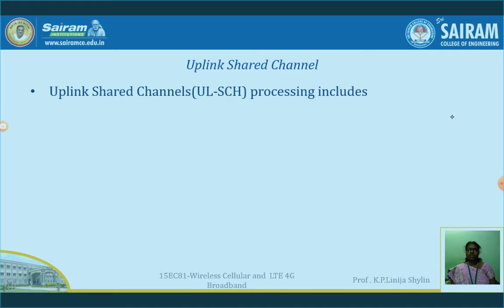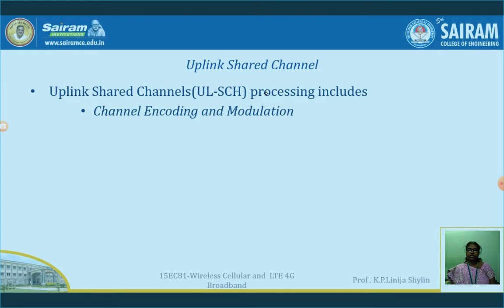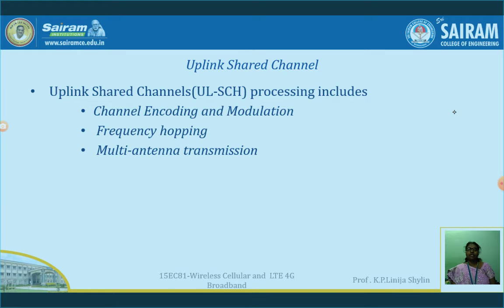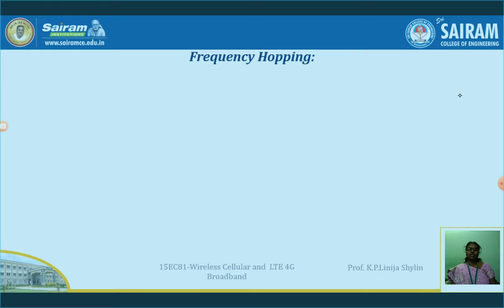In continuation of this, we will see the processing. There are 3 types of processing in the uplink shared channel. The first one is channel encoding and modulation — the modulation part we have discussed in the previous session. The next is frequency hopping, and the third is multi-antenna transmission. Here we are going to discuss frequency hopping.